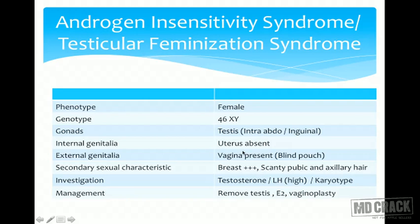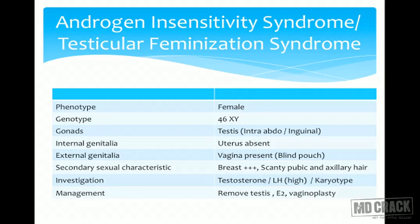Breast development is good (Tanner stage 4), but pubic and axillary hair is scanty. Testosterone levels may be low, normal, or high depending on which enzyme is deficient. Because there is no negative feedback on pituitary from testosterone, LH levels are very high — the body keeps signaling for more testosterone production. Karyotyping confirms 46,XY. Management: remove testes (risk of seminoma), give estrogen supplements, and perform vaginoplasty to support sexual activity and maintain the feminine phenotype.